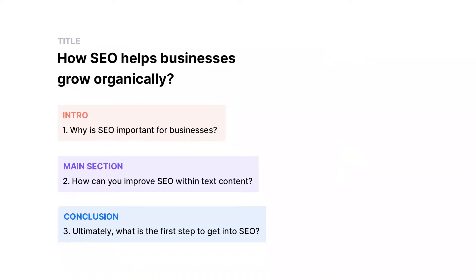Think about it this way: an article often consists of an engaging intro, a value-transferring main section, and an easy-to-digest conclusion. Brainstorming and writing down ideas for a content brief before starting to create is extremely helpful. For example, if you want to curate content for a blog about how SEO helps businesses grow organically, you should think about organizing your creative process like this.